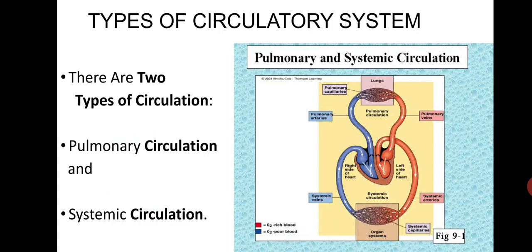There are two types of circulatory system: pulmonary circulation and systemic circulation. In the picture it's easily explained. First we will talk about pulmonary circulation.